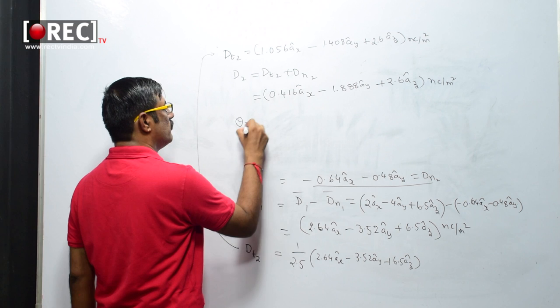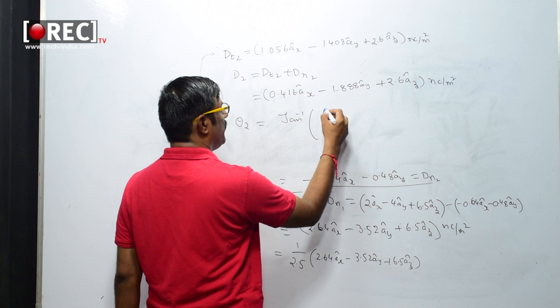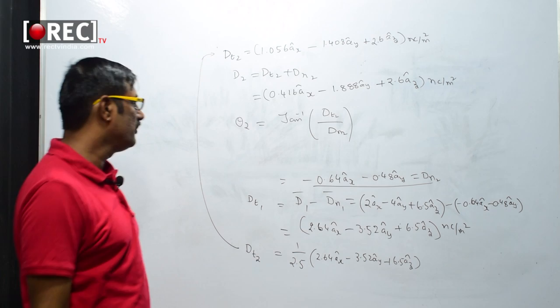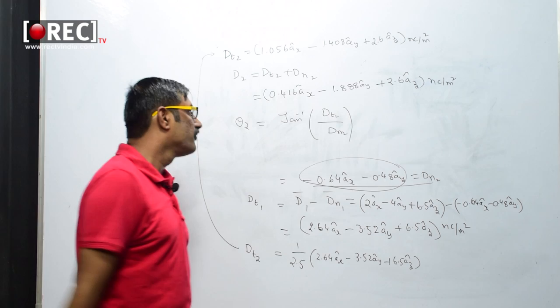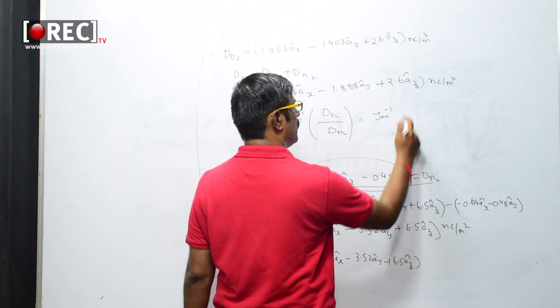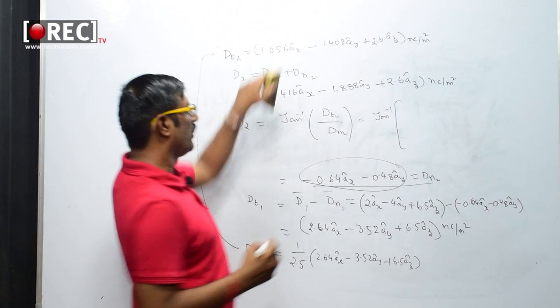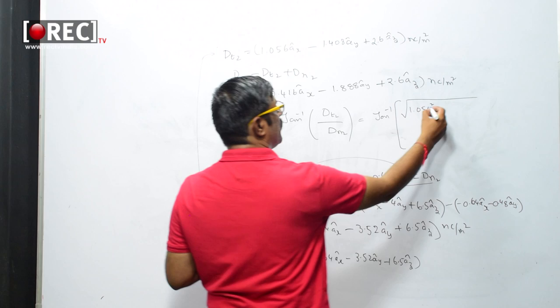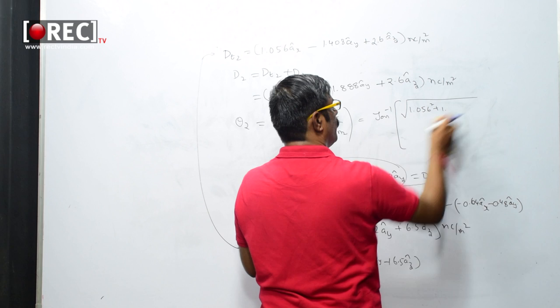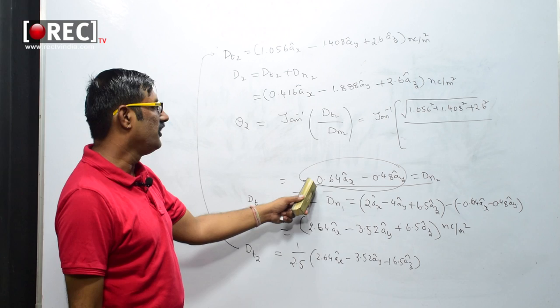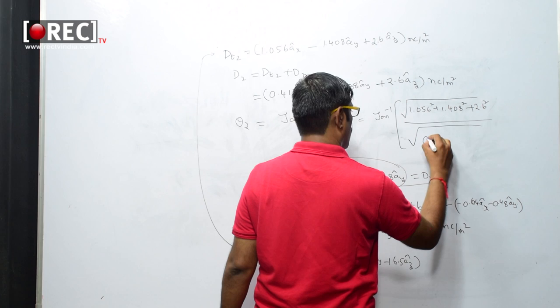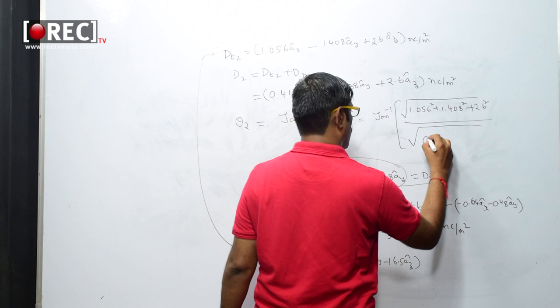To find θ2, we use θ2 = tan⁻¹(|D_T2| / |D_N2|). The tangential magnitude is √(1.056² + 1.408² + 2.6²) and the normal magnitude is √(0.64² + 0.48²) = √(0.4096 + 0.2304) = 0.8. The final answer for θ2 is 75.7 degrees.